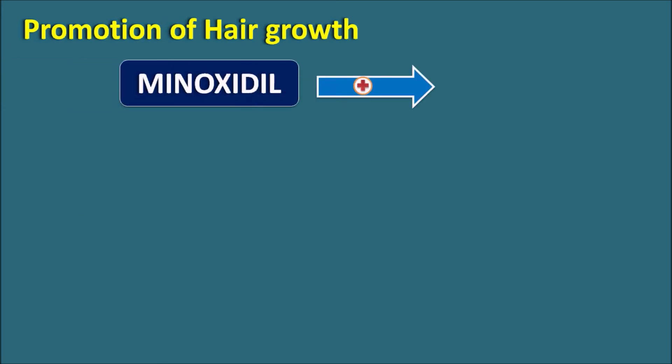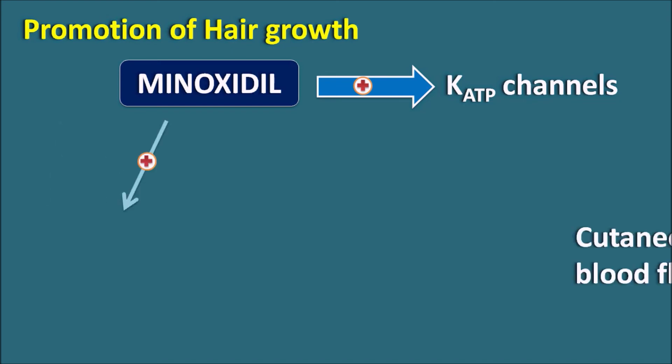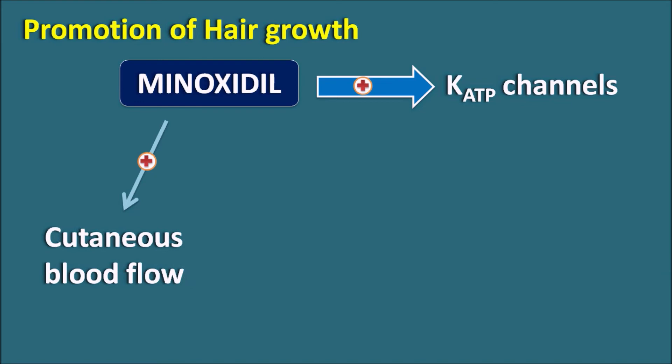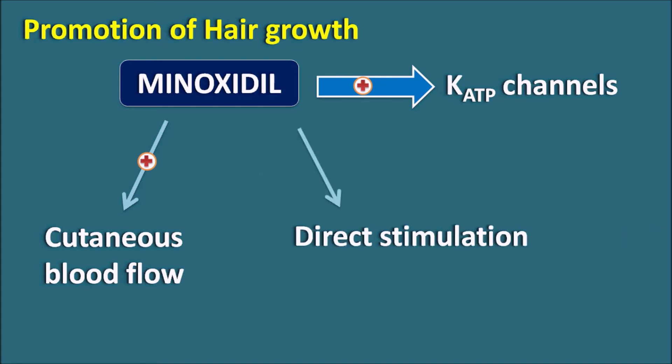The second effect is promotion of hair growth. Minoxidil promotes hair growth again through activation of ATP-sensitive potassium channels. At the cutaneous blood vessels, these channels are present. Minoxidil activates these ion channels, thereby increasing cutaneous blood flow, which promotes hair growth. At the same time, Minoxidil can also directly stimulate the hair follicles — it increases cell proliferation at the hair follicles, thereby promoting hair growth.